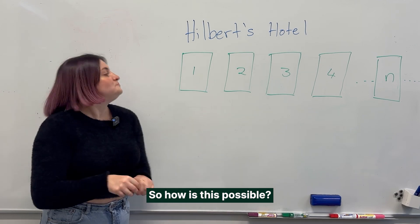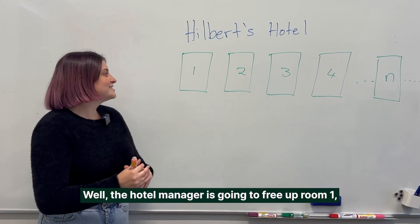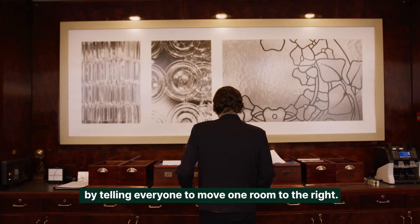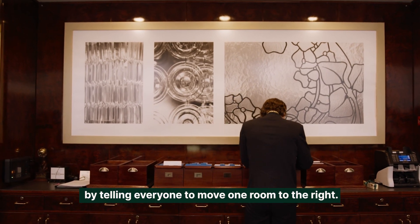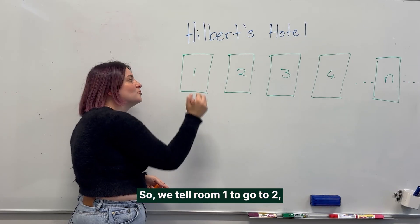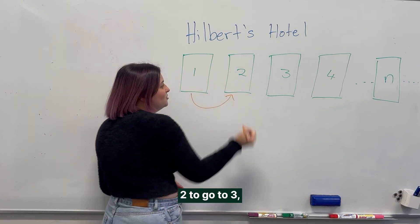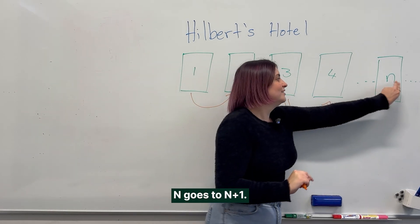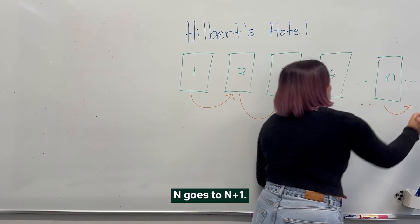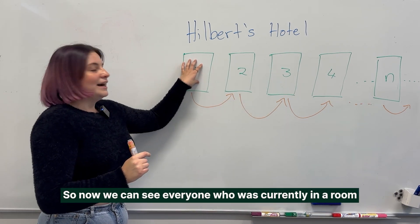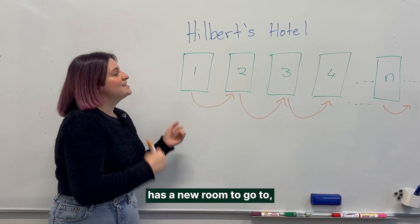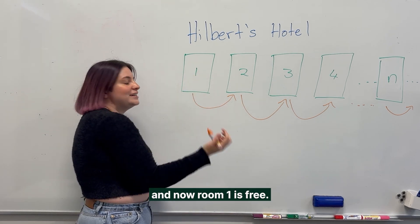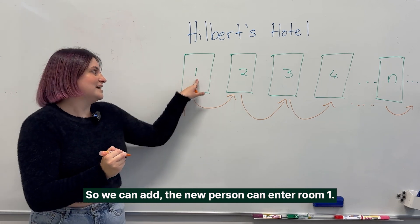How is this possible? The hotel manager is going to free up room one for the new person by telling everyone to move one room to the right. So room one goes to two, two goes to three, three goes to four, and so on — for any n, n goes to n plus one. Now everyone who was in a room has a new room to go to, room one is free, and the new person can enter room one.